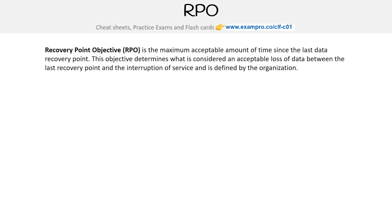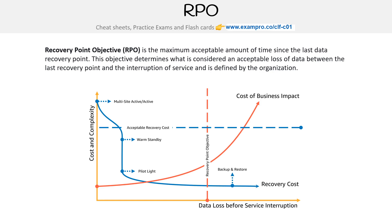Let's do the same for RPO. Recovery Point Objective is the maximum acceptable amount of time since the last data recovery point. The objective determines what is considered an acceptable loss of data between the last recovery point and the interruption of service, and is defined by the organization. We pulled this from the AWS white paper for disaster recovery.